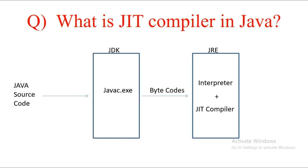To convert machine-independent bytecodes into machine language understood by your system, you need two things: the interpreter and the JIT compiler. The interpreter goes line by line through your bytecodes and converts them to machine language, but this decreases efficiency and increases the time to fully convert bytecode. Hence, JIT compiler was introduced. The JIT compiler is responsible for performance optimization of Java applications at runtime — it compiles a bunch of code into machine code all at once rather than interpreting line by line.